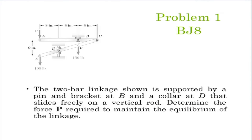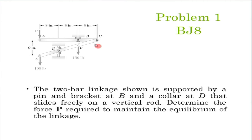With this preamble, let us move on to tutorial problems. A very simple problem — it will not take more than 5 minutes. The 2-bar linkage shown is supported by a pin connection and a bracket connection at B and D. Determine the force P. This force P is applied upwards; force E of 100 pounds is applied downwards; 150 pounds is applied downwards. We are asked to determine the force P required to maintain equilibrium of the linkage.